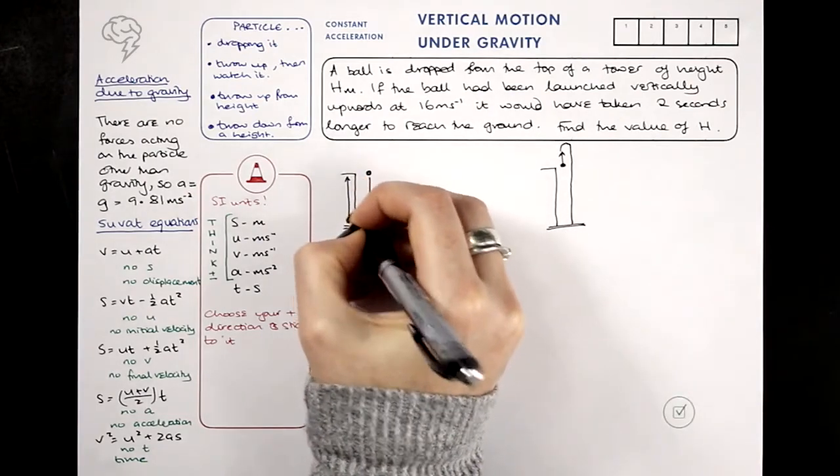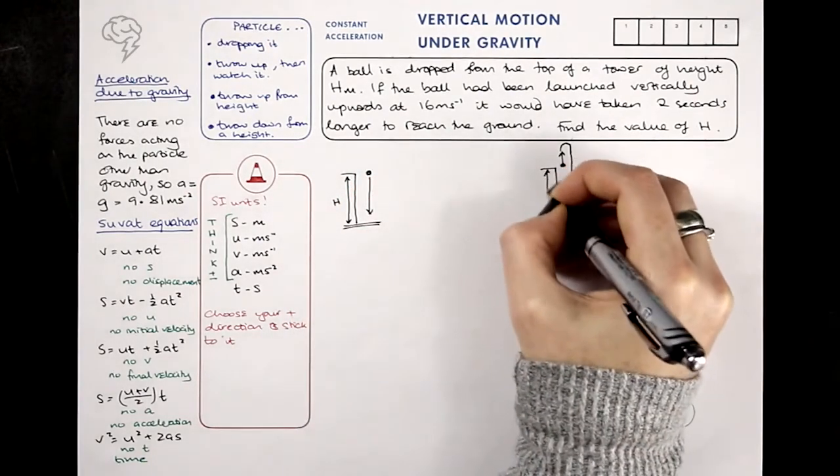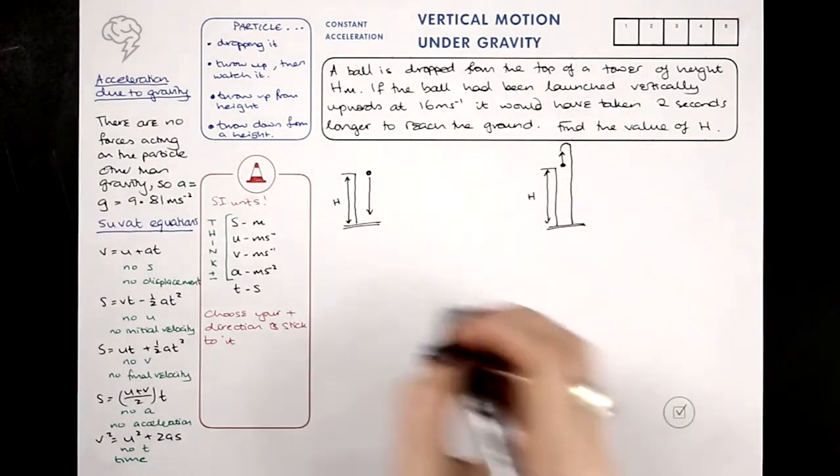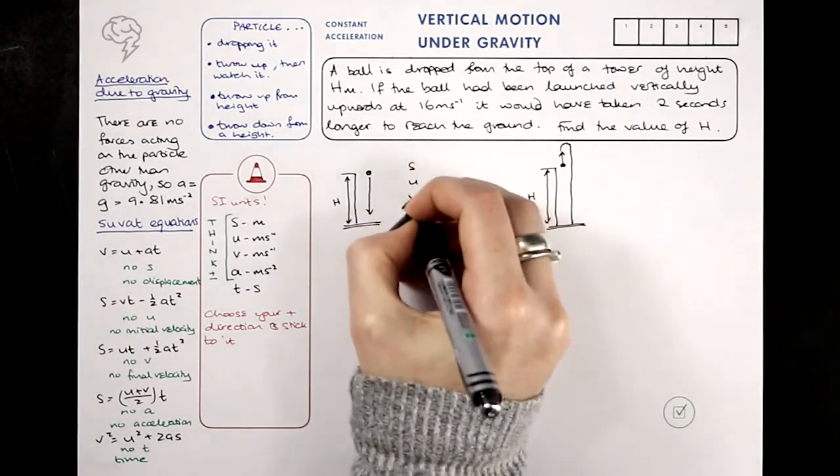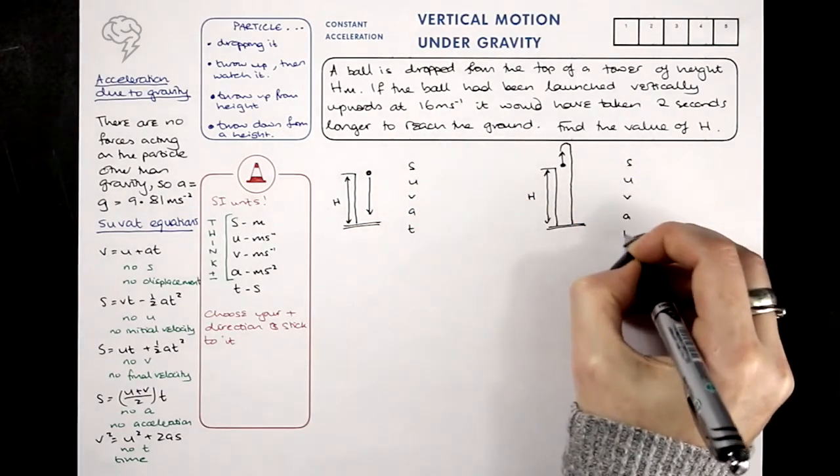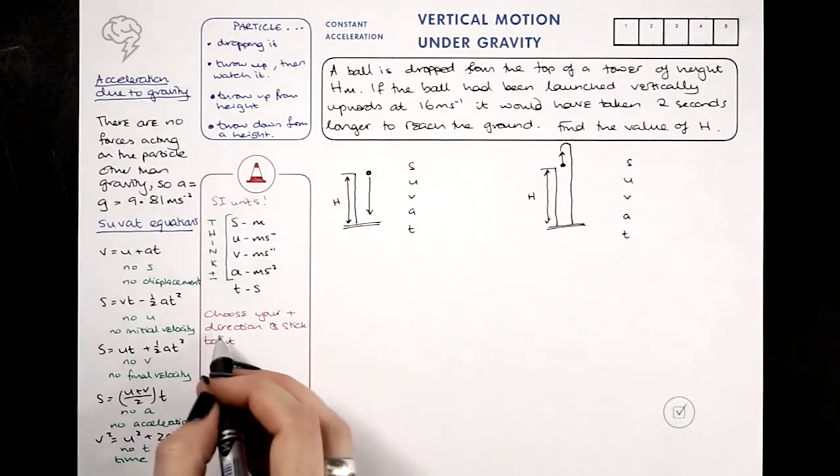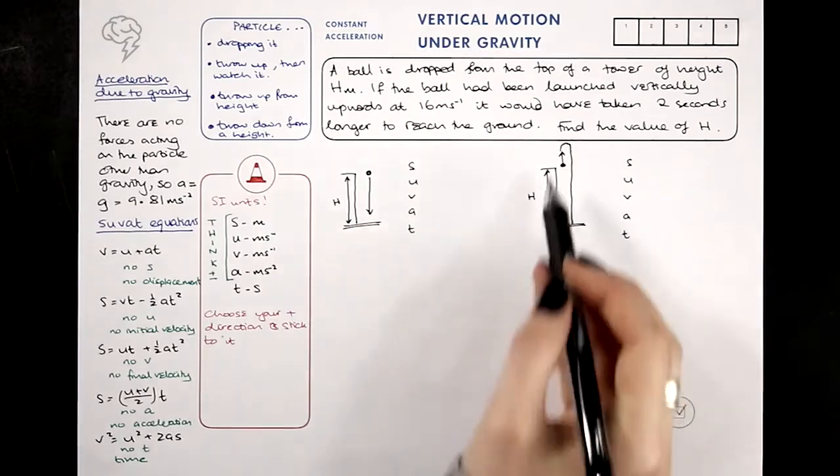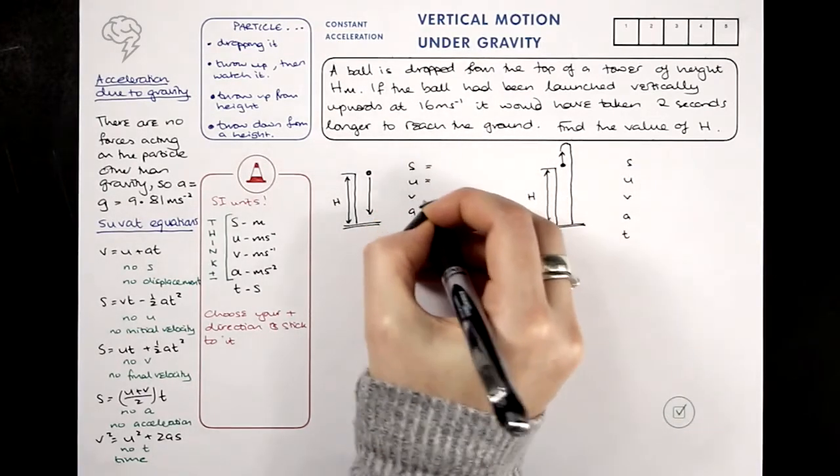This height of this tower or whatever it is, is H apparently, H meters. And so I'm going to form my SUVAT table and then choose a SUVAT equation. And I know I can use SUVAT tables and SUVAT equations because I've got constant acceleration because the particle is just moving under gravity. There's no other forces on the particle at all.